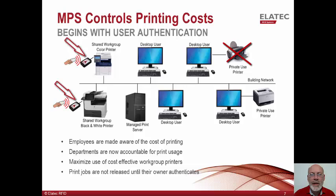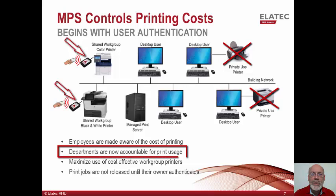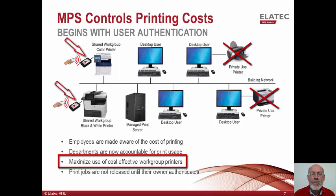Less cost-effective personal printers are removed from the environment, and faster workgroup printers are often added to replace them. Training is provided, so employees are made aware of the cost of printing in color versus black and white, and also about the benefits of printing on both sides of paper. They are made aware of the high cost of printing on a personal printer. Managed printing can be used to keep track of all prints which are made, enabling more accurate allocation of printing costs to each department, and further enabling companies to optimize deployment of their printing hardware, allocating high and low capability equipment where the accounting metrics show they are needed.